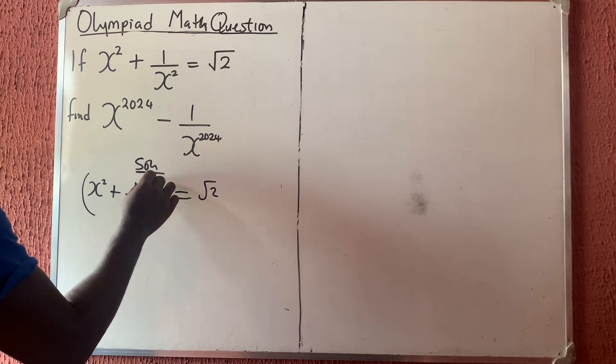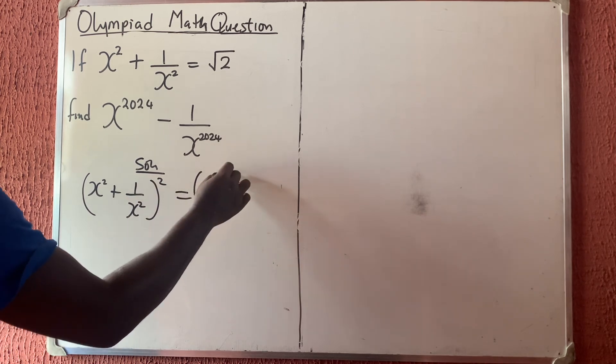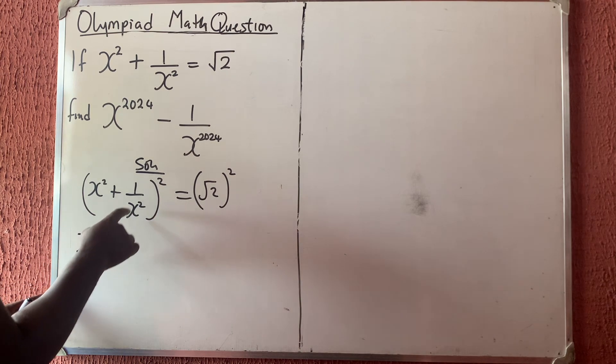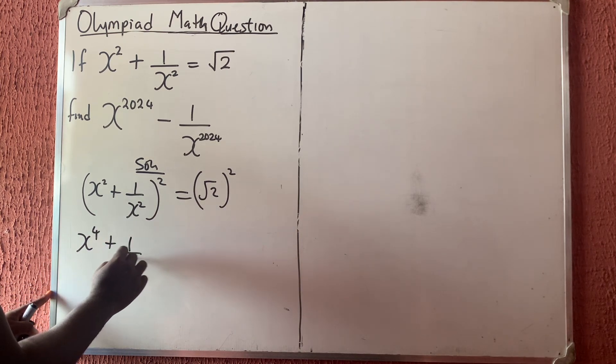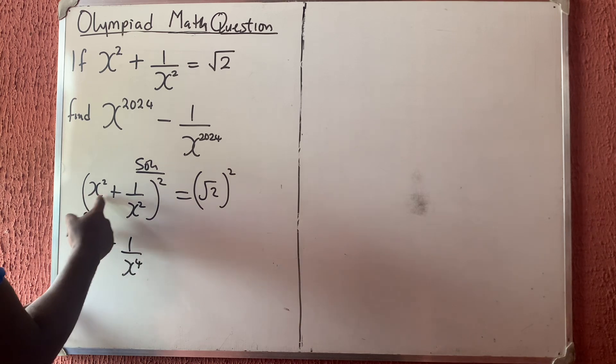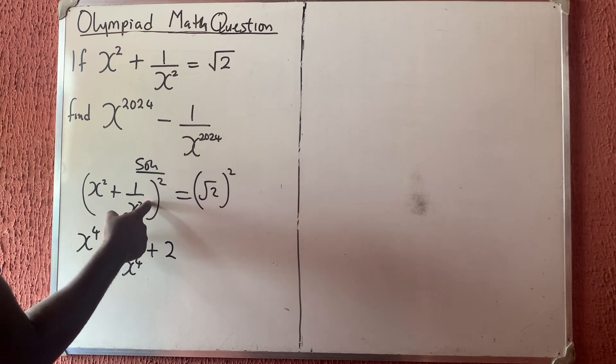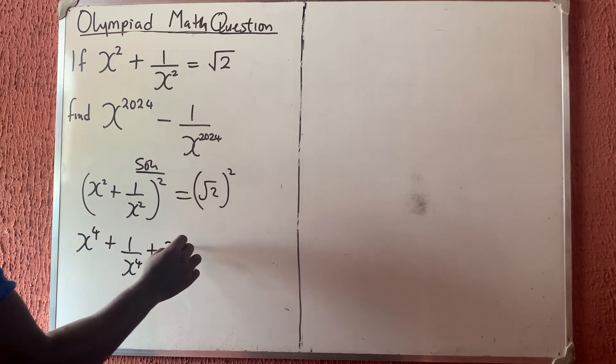Now let us square both sides to see what happens. Square both sides, we're going to have square this first one, you have x squared 4. Square the last one, I'm going to have 1 over x squared 4. Now this time, double it, I'm going to have 2. This times this is 1, double it, I'm going to have 2.